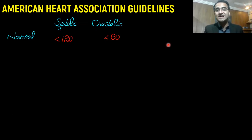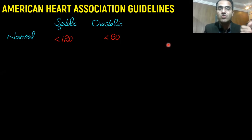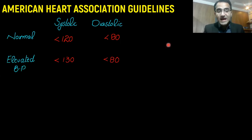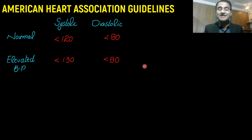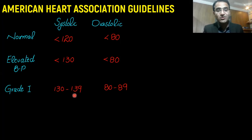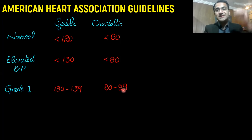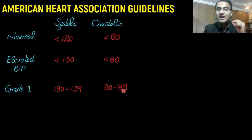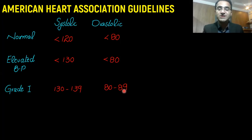American Heart Association guidelines say that systolic blood pressure less than 120 and diastolic less than 80 is normal blood pressure. Elevated blood pressure is between 120 to 130. The AHA recently lowered the bar for the diagnosis of hypertension so that more patients can be diagnosed in the early stages to prevent long-term complications.